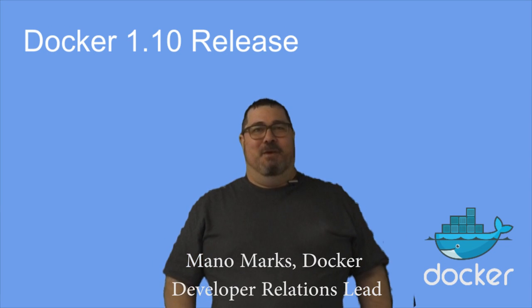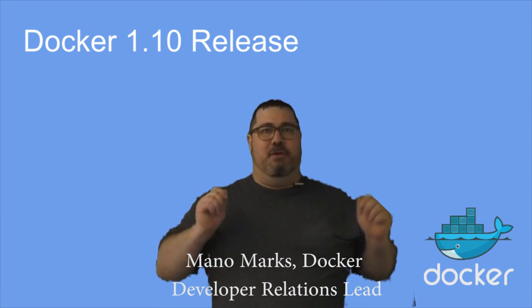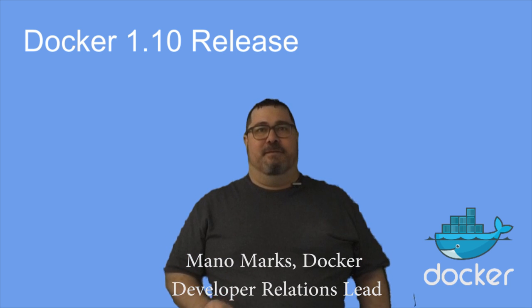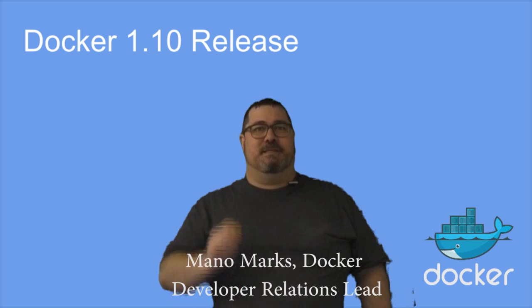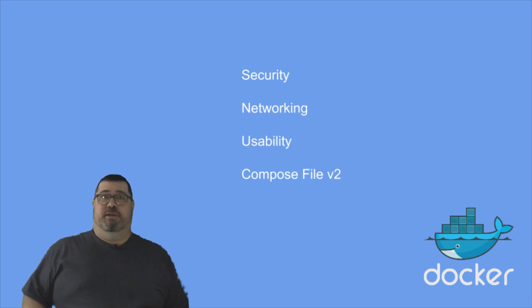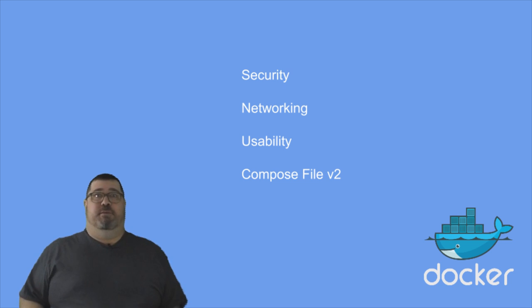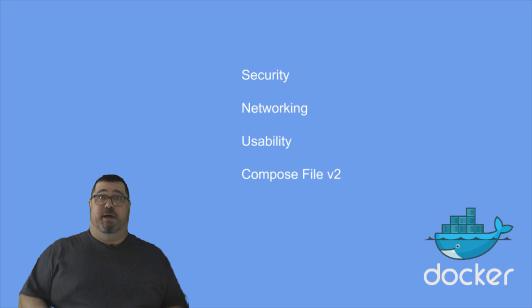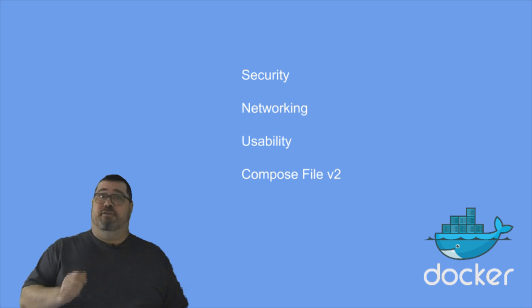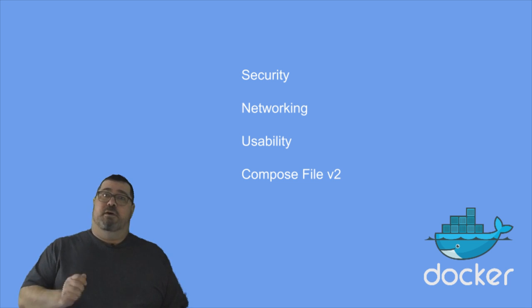It's time for another Docker release. We do this every couple of months to bring you new features and fix bugs. This one is big. We're moving into double digits — this is Docker 1.10. In this release, we've made some huge steps forward with container security. Networking is getting even better, and we've added new tools and features for sysadmins. And to support these changes, we have a new Compose file format. Let's take this piece by piece and start with Docker Engine.